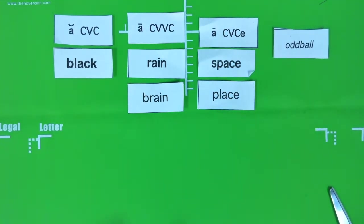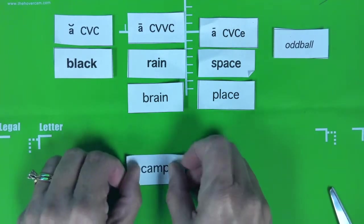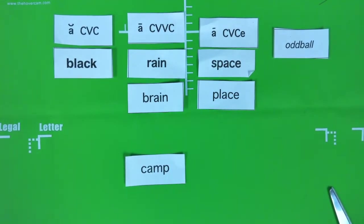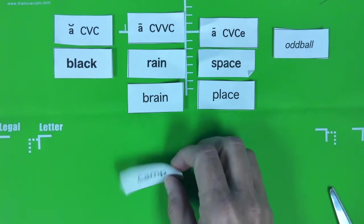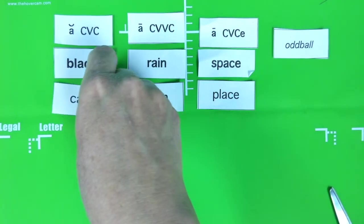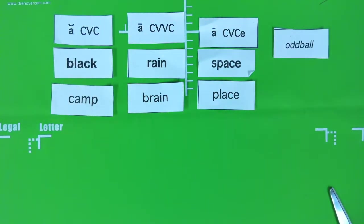Now I need one more word. I have camp. A. That's the short A sound. And I find the A here, and I see that on either side are consonants. C is a consonant, and M is a consonant. Camp. That is a short vowel sound. That's a CVC word. It goes under black.